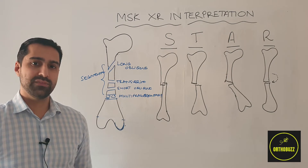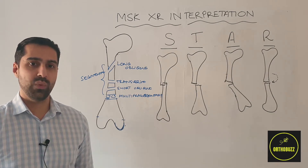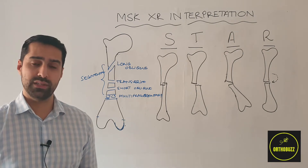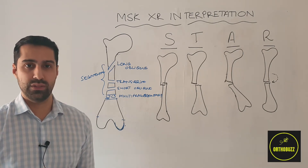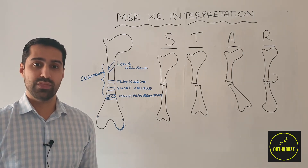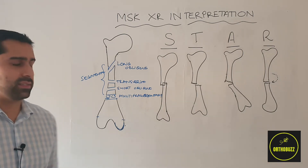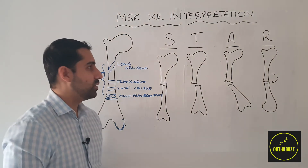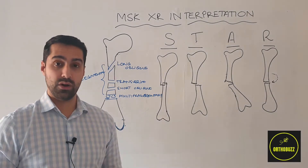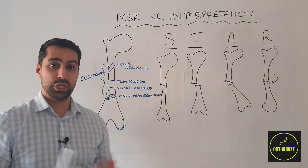Once we've identified the bone and the type of fracture, we now need to describe the two ends of the fractured bone and how they relate to each other in terms of length, rotation, and alignment. This is the next step, and it can be remembered by the acronym STAR. The S stands for shortening, which looks at how the two bone ends are related to each other.